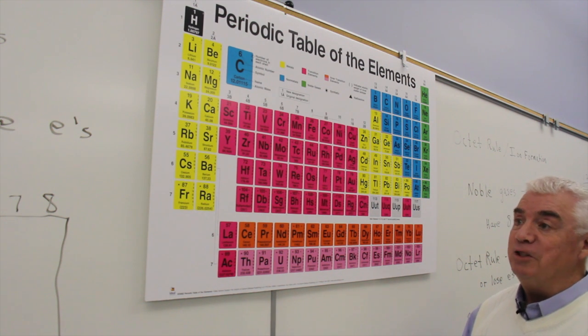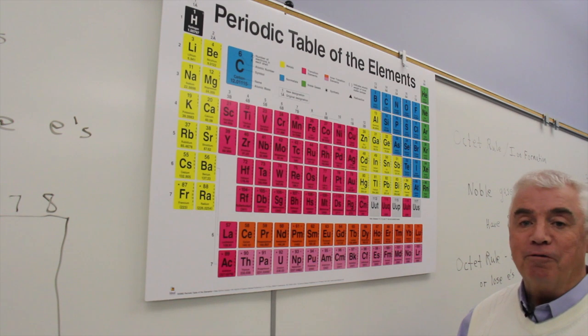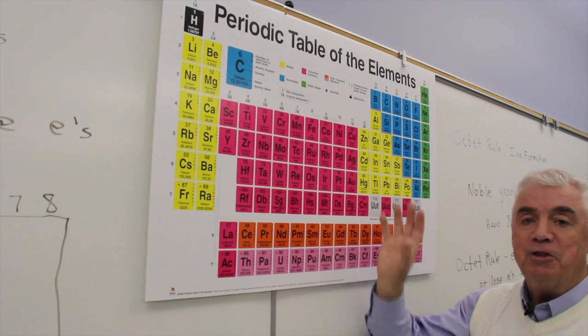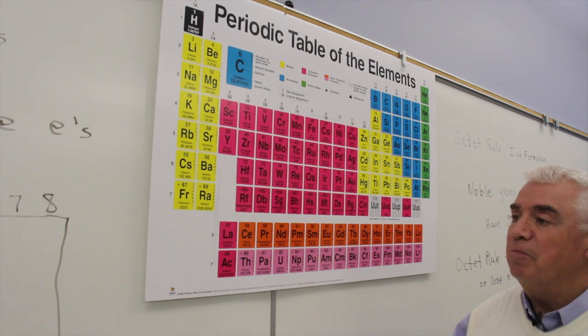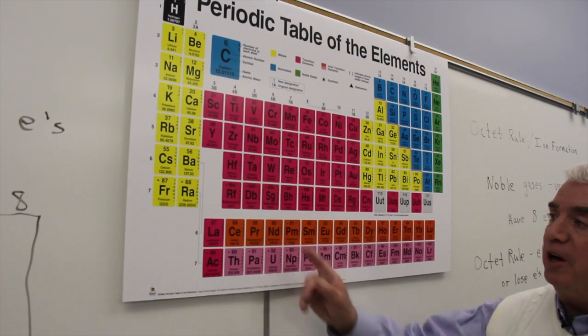So it's really pretty easy to identify the number of valence electrons as long as you have access to a periodic table, and you always will. Let's practice the concept.